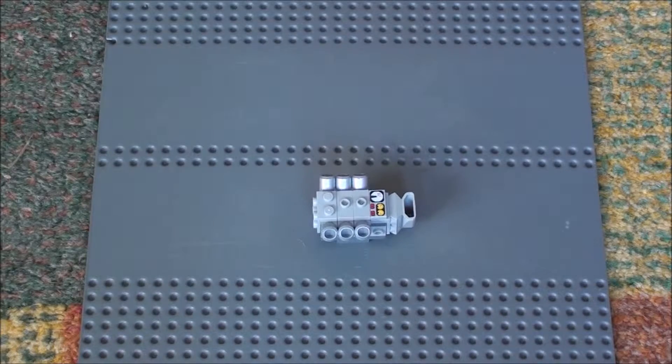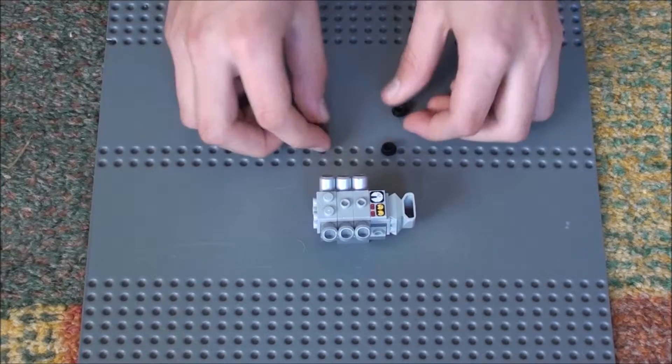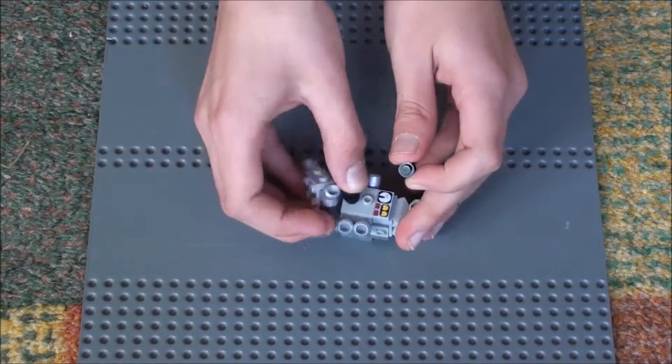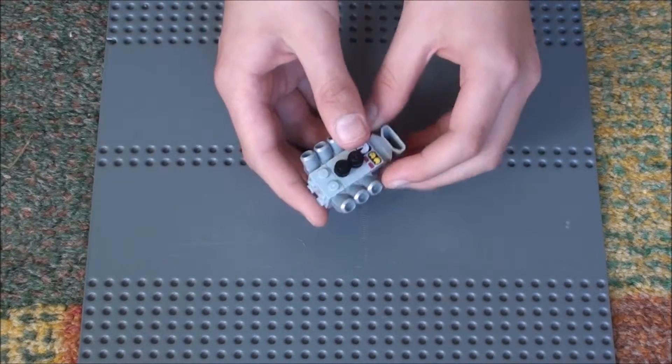Then get these 4 black studs and stack 2 on top of each other like that and put one each on the jumper plates like that.